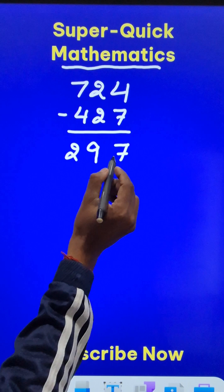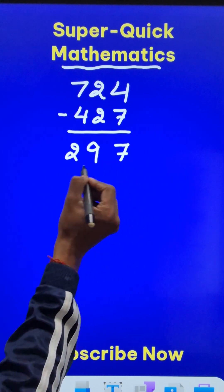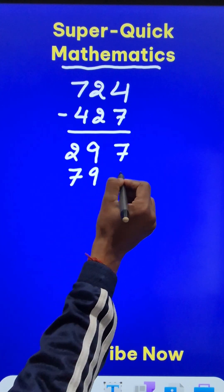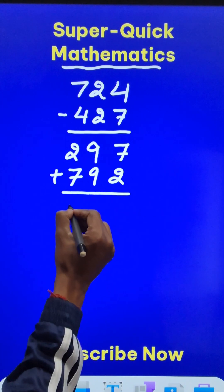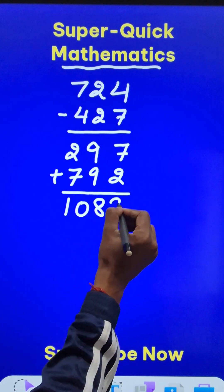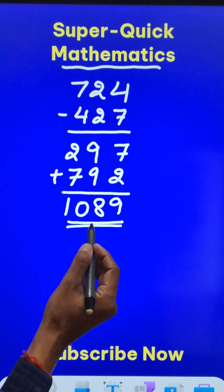Now ask him to repeat this process. 297 the other way around becomes 792. Now when he adds these two numbers, you will be surprised that every time the answer is going to be 1089.